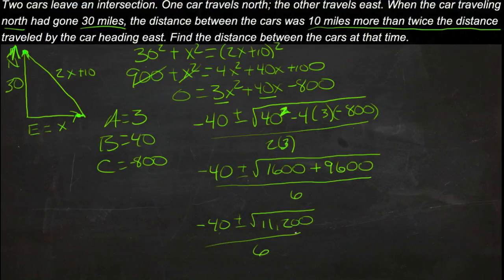The square root of 11,200 is about 106. So we have negative 40 plus or minus 106 over 6.